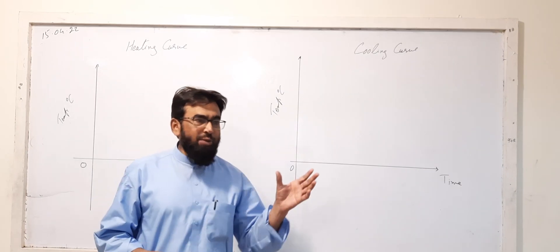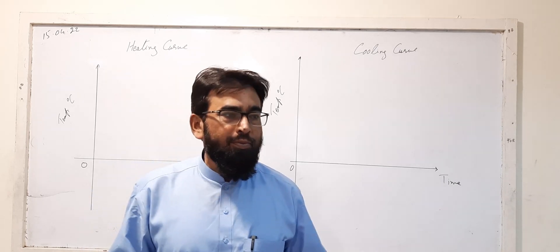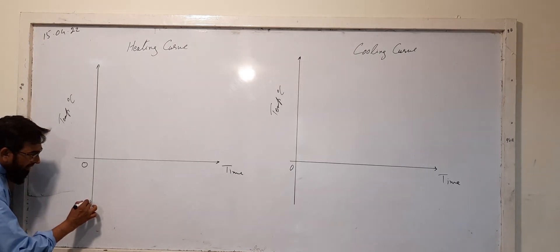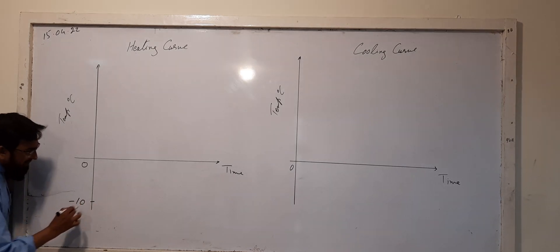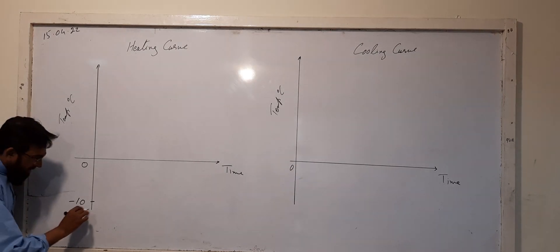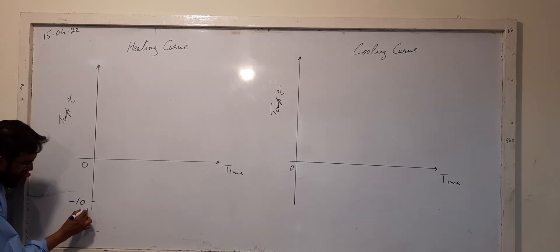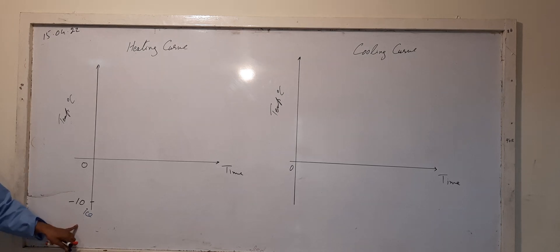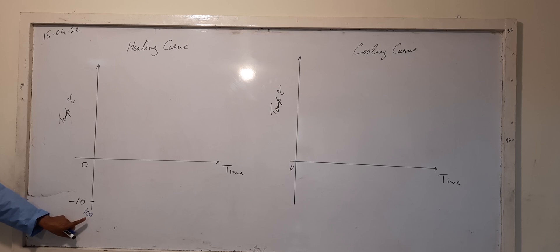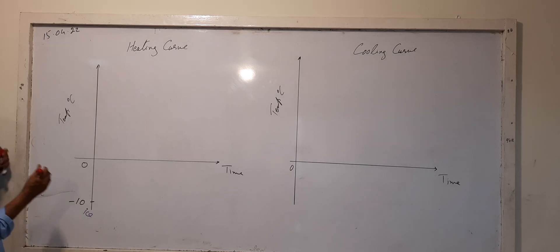Consider that you have a piece of ice at minus 10 degree Celsius. The heating curve is starting from here — ice is at minus 10 degree Celsius, and its temperature is increasing.